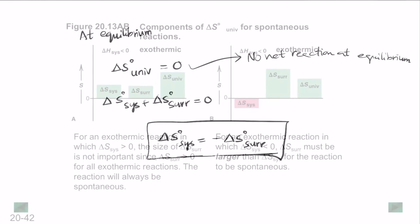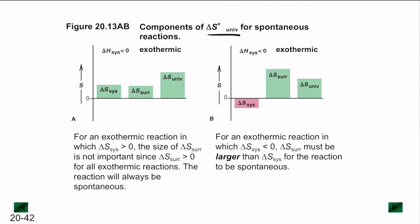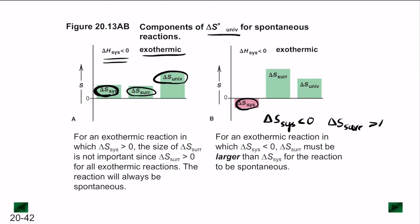Now let's look at two ways delta S of the universe can be positive. For an exothermic reaction where delta S of the system is greater than 0 and delta S of the surroundings is also greater than 0, both increase delta S of the universe. In this exothermic system, delta H is less than 0. If delta S of the system is greater than 0, delta S of the surroundings must be greater than delta S of the system for the delta S of the universe to be positive.